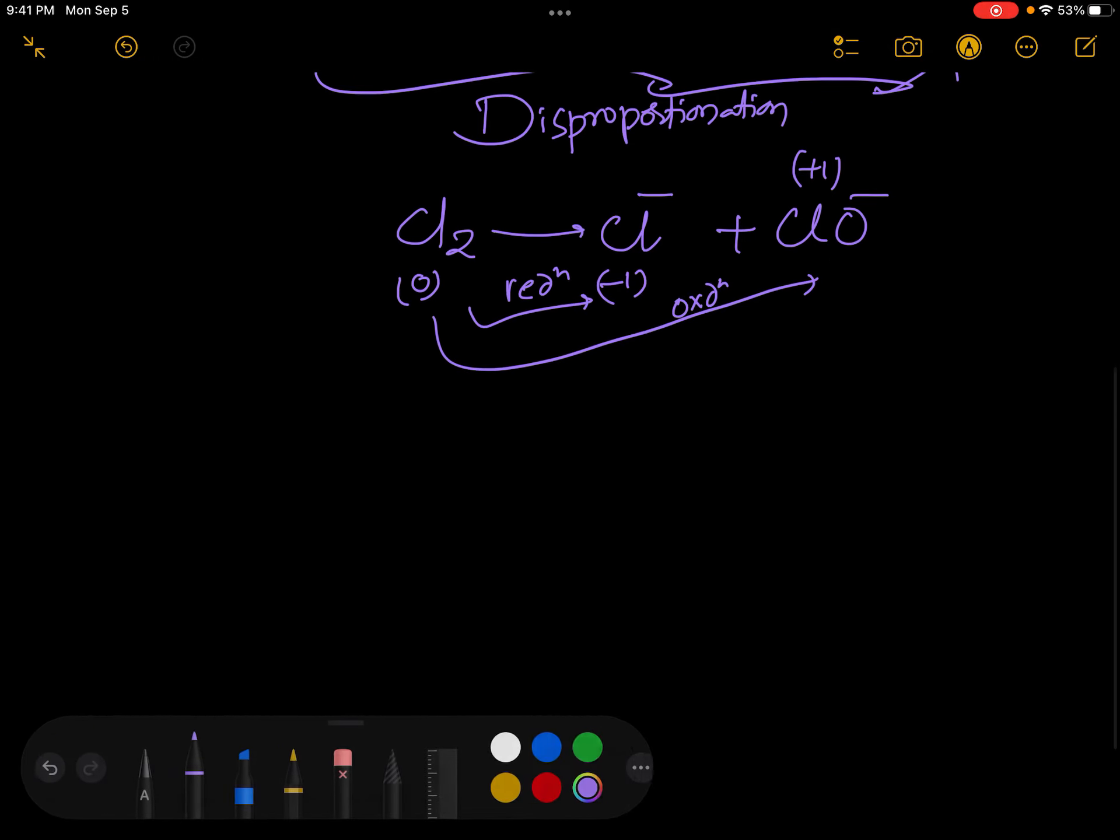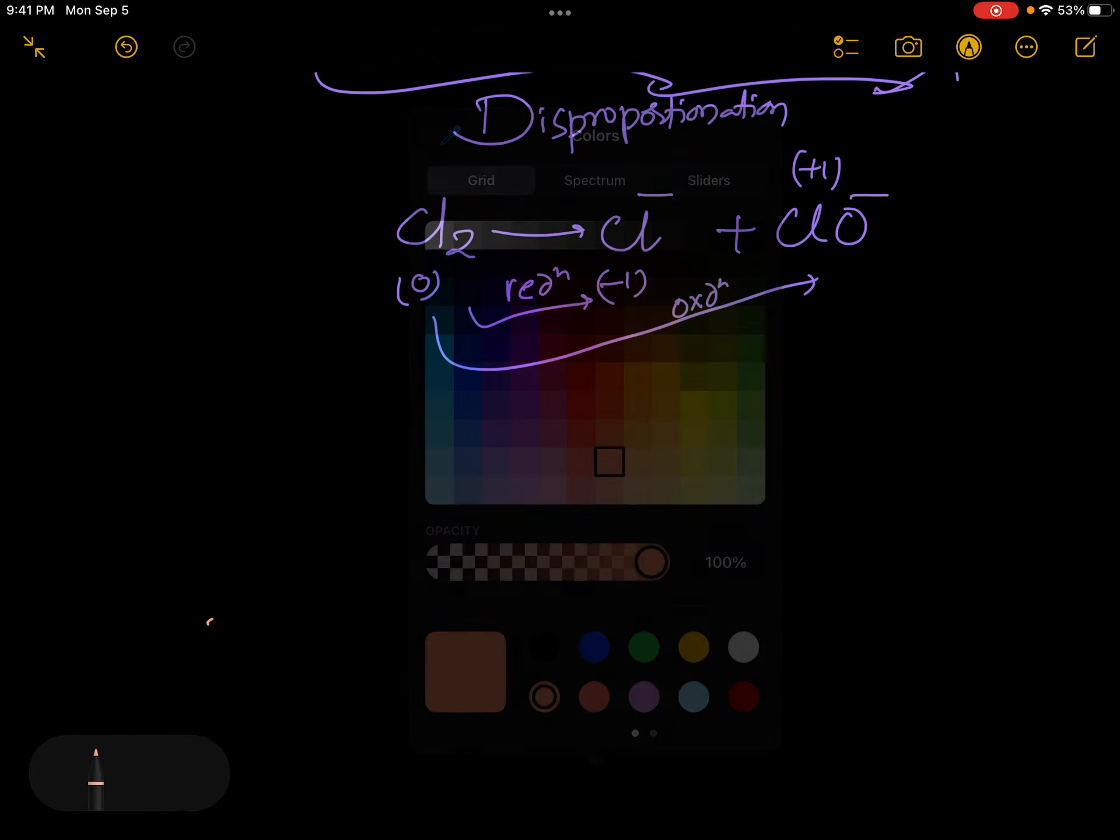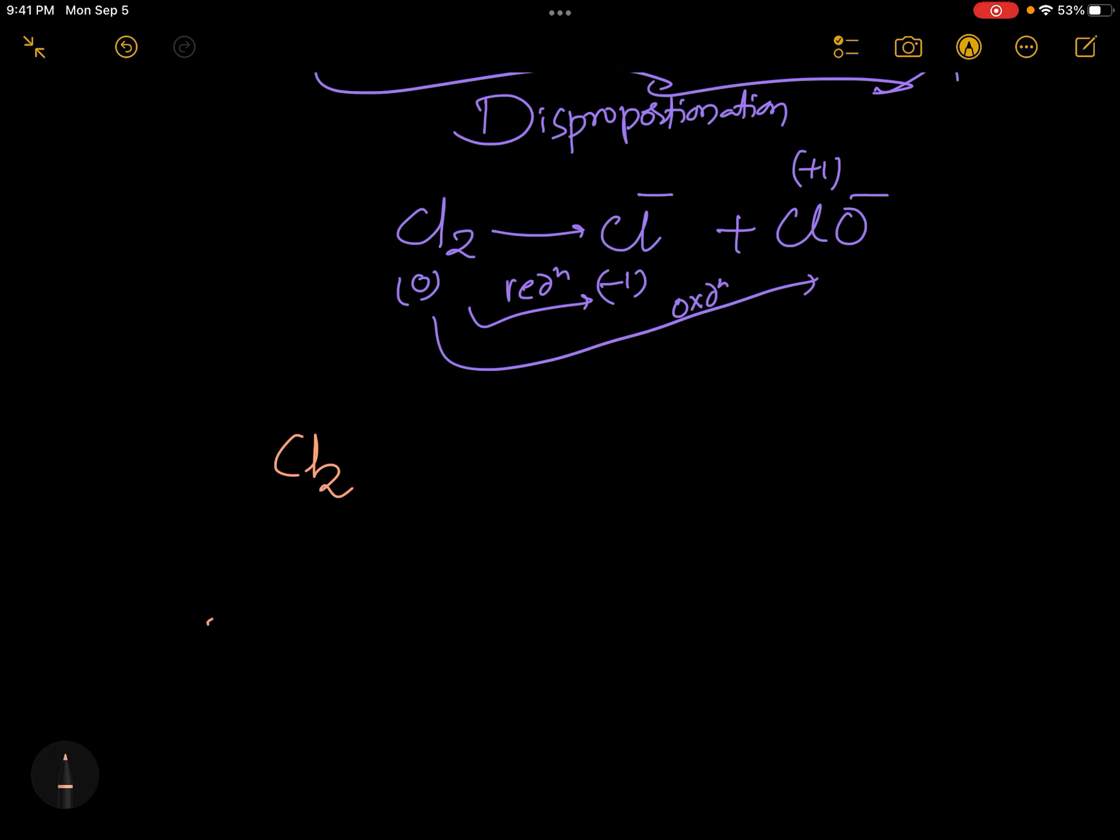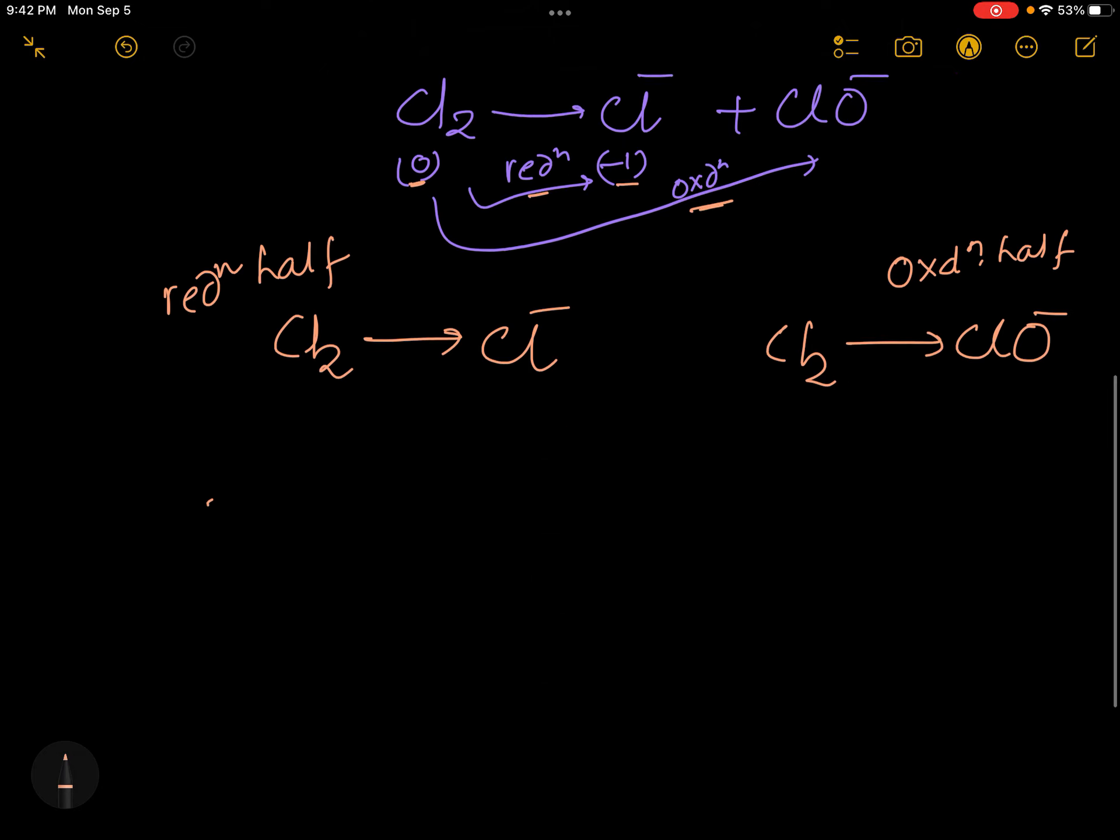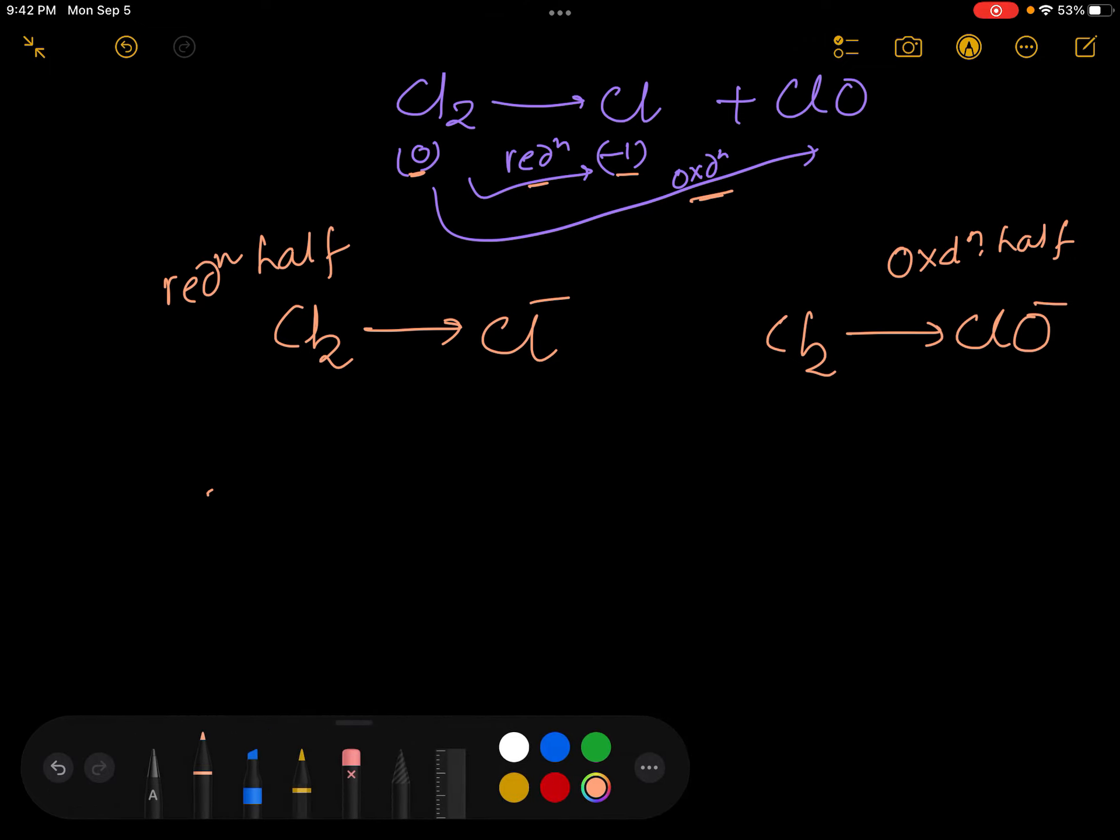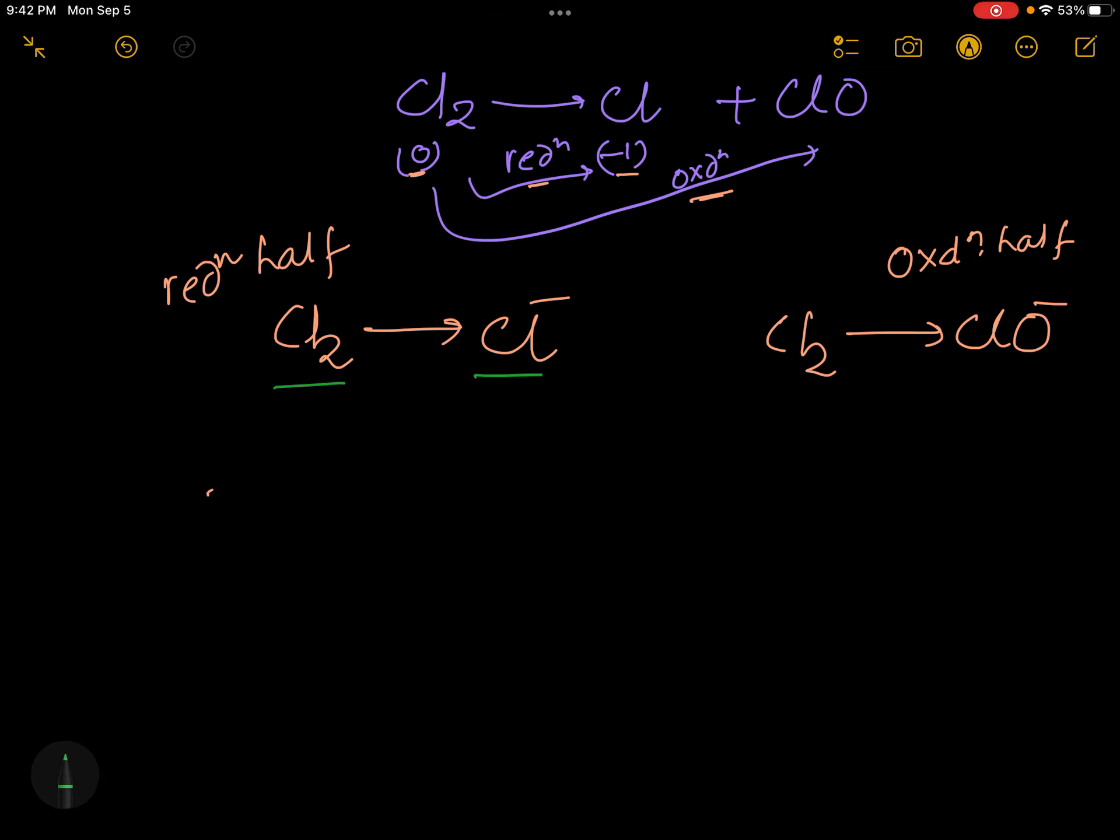Now we will balance this equation. See, Cl2 gives rise to Cl minus. Cl2 gives rise to ClO minus. Here this is reduction half. This is your reduction half, and this is oxidation half. We have discussed just now - if oxidation state decreased, then it's reduction. If it increased, then it's oxidation. Very easy.